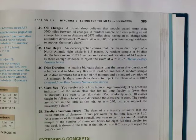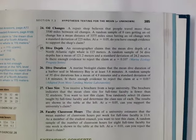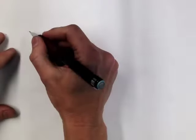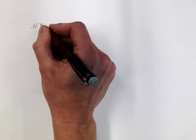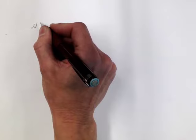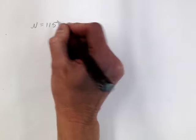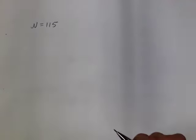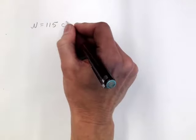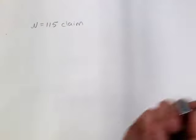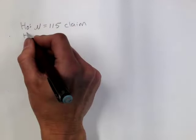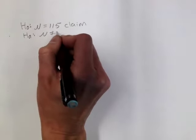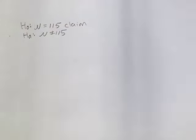I'll write the claim as a mathematical statement: mu is equal to 115. This is the claim. Will this be the null or the alternative? It's going to be the null. This forces the alternative to be not equal to 115, so this is a two-tailed test.